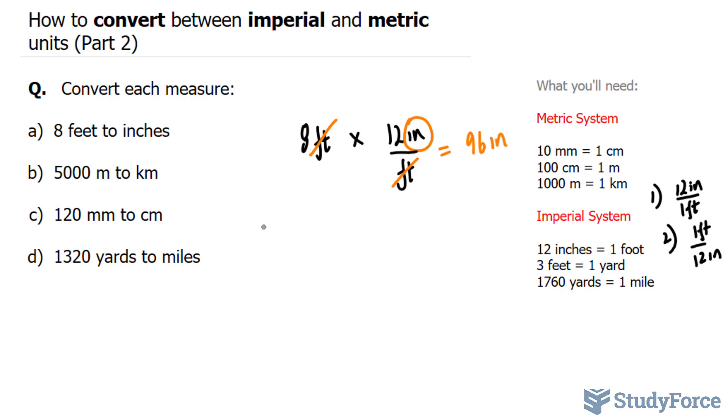Let's do the same thing for B, using the same method. So this was A, and now we're on B. We're going from 5,000 meters, which is a metric unit, to another metric unit, kilometers. The conversion ratio we'll use in this example is shown right here, where it relates meters and kilometers.